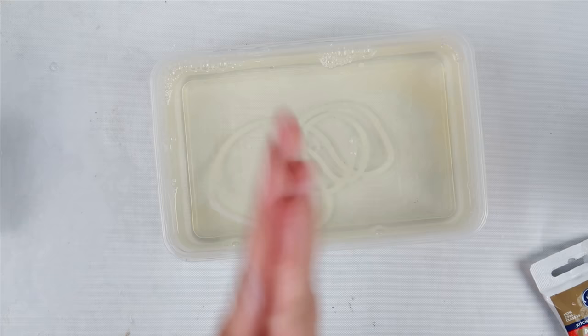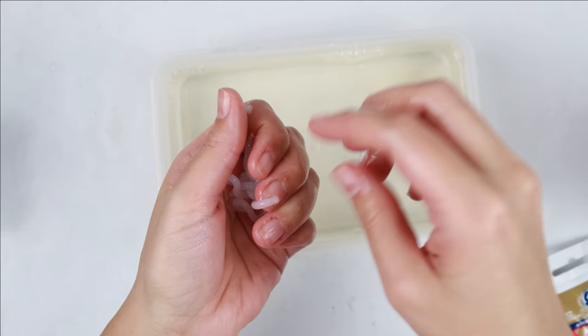You can eyeball the amount that you need for your size of mold. Once you have the amount of silicone in the water that you want, you're going to pick it up, gather it all together, and continue to work it together in your hands.